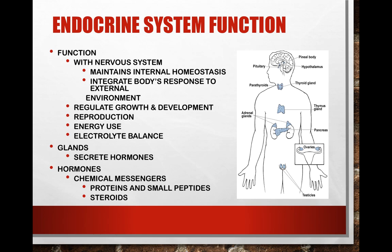Hormones are chemical substances synthesized from amino acids and cholesterol, and they act on our body tissues to affect cell activity. We have two different groups of hormones: one group is proteins and small peptides, and the second group is steroids. Hormones from the adrenal glands and reproductive organs are steroids, and the others are proteins.